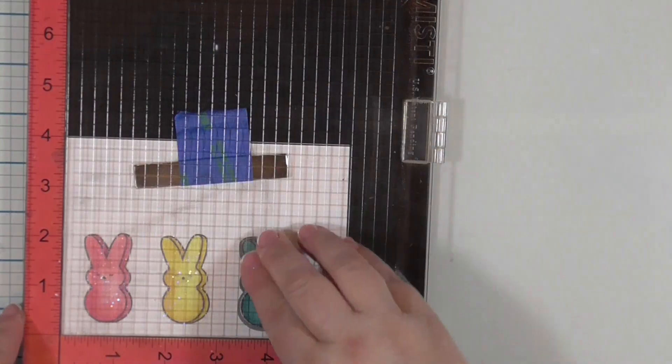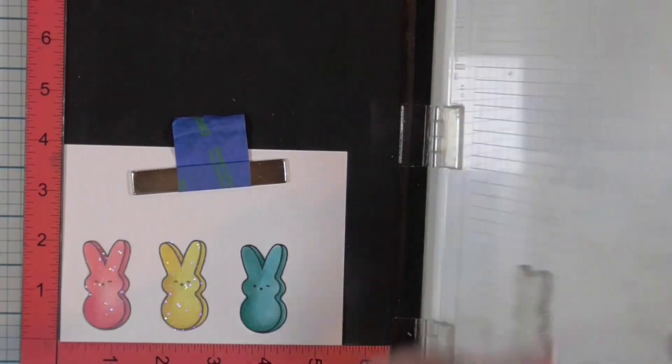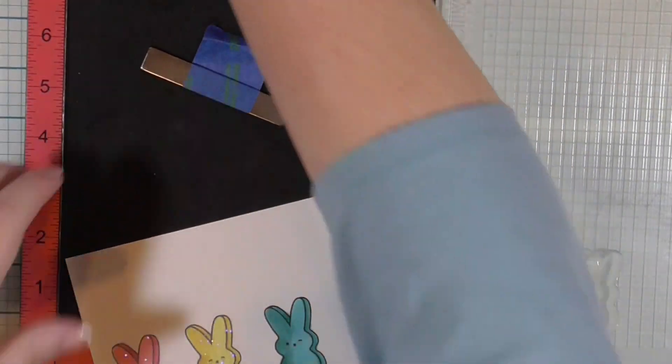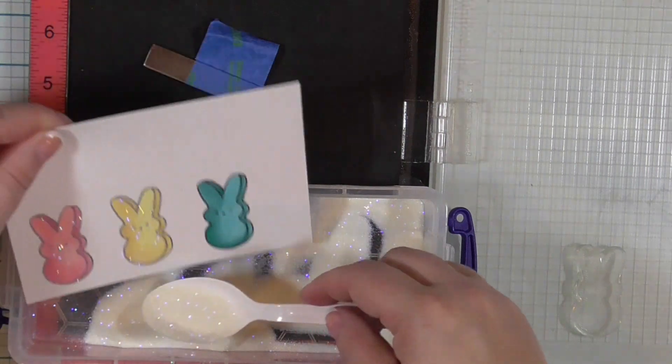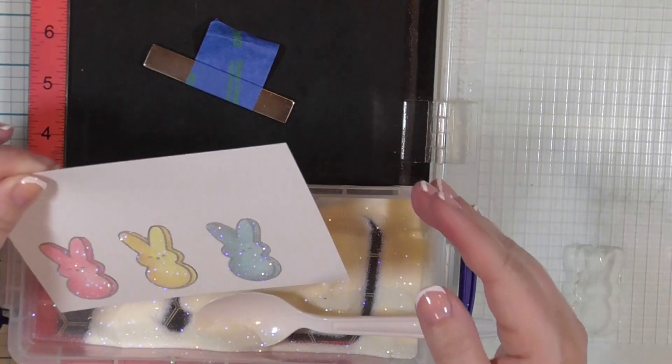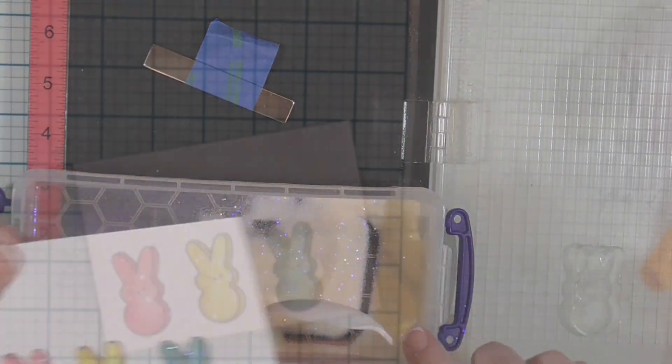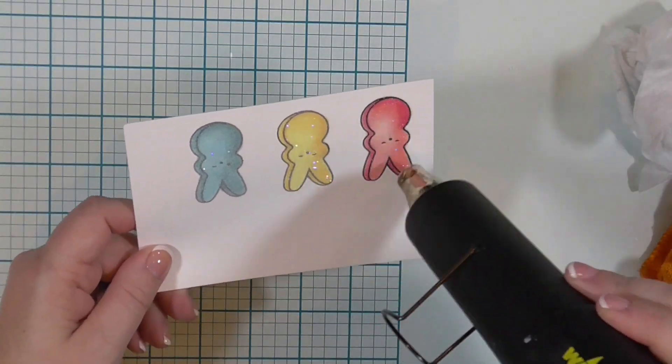Now, this would not be the worst thing in the world if the embossing powder was slightly offset because you wouldn't notice it because it's just clear embossing powder with glitter. But if you're trying to over-stamp something, it's really important to make sure that everything's lined up properly. Okay, now that I have glitter on all of my peeps, I'm going to go ahead and melt that embossing powder with my heat tool.